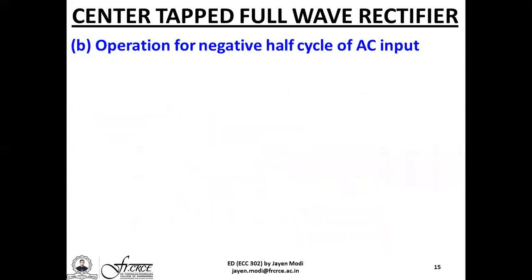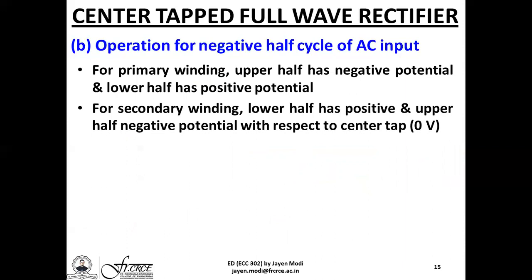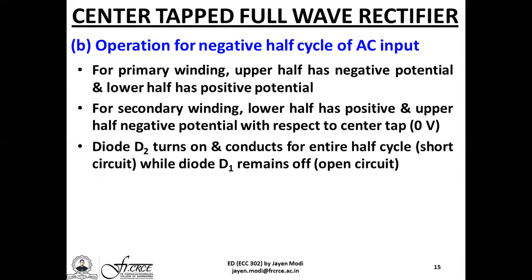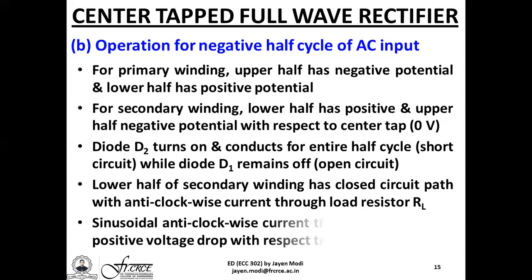For the negative half cycle, the lower half of the secondary has positive and the upper half has negative potential with respect to the center tap at 0V. Diode D2 turns on for the remaining half cycle from π to 2π, behaving like a short circuit, while D1 remains off. The lower half establishes a closed circuit path with anti-clockwise current through RL, causing a positive voltage drop with respect to the center tap at 0V.